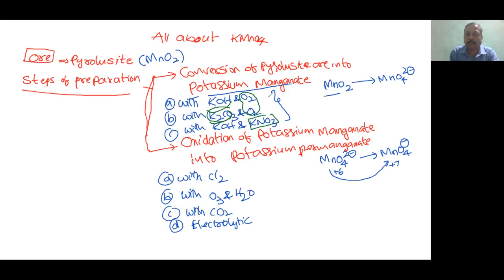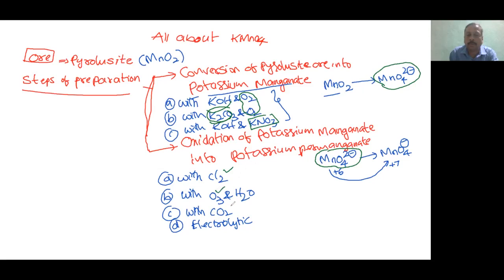After step one, we have MnO4²⁻. That MnO4²⁻ is now further oxidized to permanganate. Potassium manganate is converted to permanganate using oxidizing agents like chlorine — chlorine undergoes reduction and oxidizes manganate to permanganate. Other options include ozone, CO2, and electrolytic oxidation.